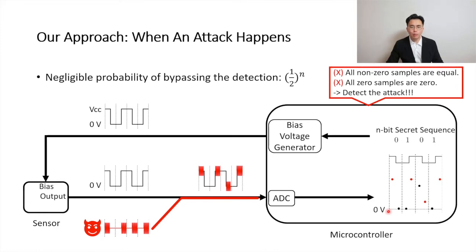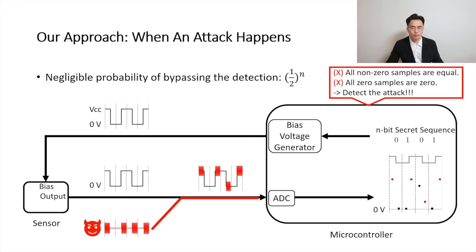This is how our approach detects attacks. In each clock cycle, the probability of a correct guess is 50%, as there are only two voltage transition directions per clock cycle. Given n clock cycles, the probability of a correct guess across all cycles is 1 over 2 to the power of n, which is negligible. In other words, the probability of dodging the detection is negligible.